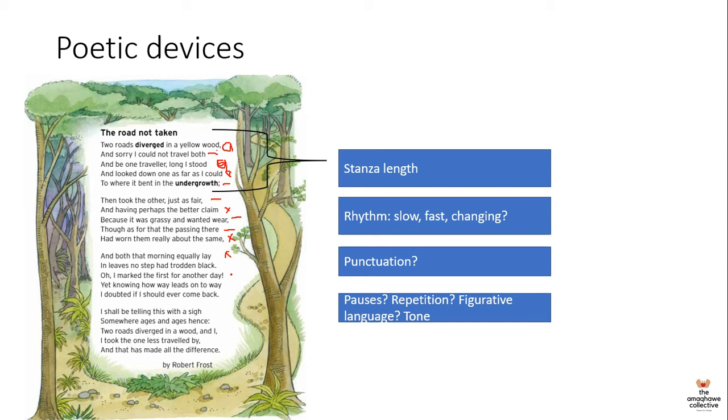Fair rhymes with where in the third line and there, whereas claim rhymes with same. So it's very much the same rhyming scheme. Let's see if it continues throughout the poem. Lay rhymes with day and way, whereas black rhymes with back. So that continues in the third stanza. Does it continue in the fourth stanza? Most possibly. Sigh rhymes with I and by. Hence rhymes with difference. Not entirely, but hence rhymes with rinse. So yeah, it sort of does follow the same, it sort of does have a rhyme scheme.